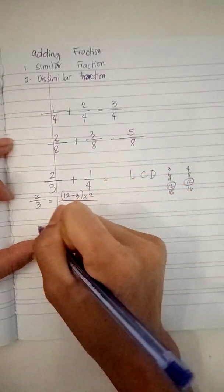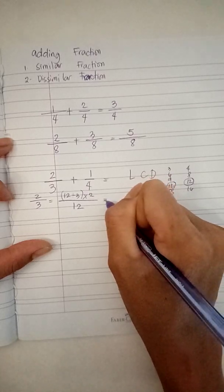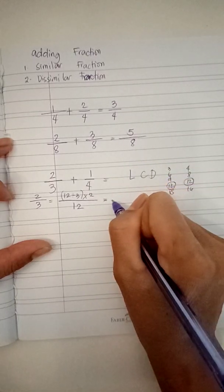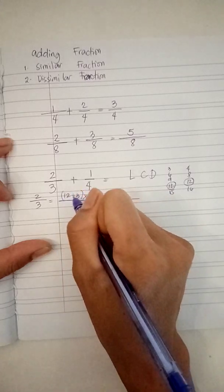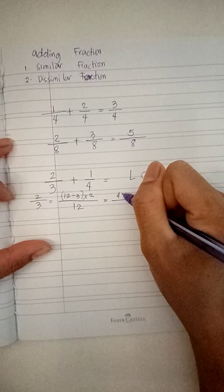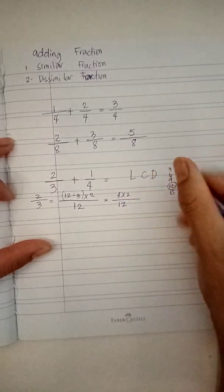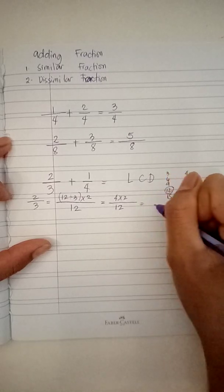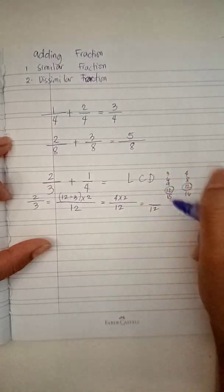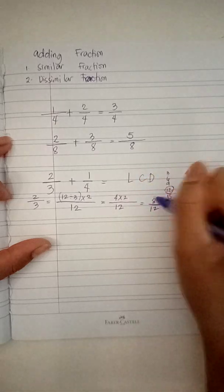Twelve divided by three equals four times two over twelve. Therefore, it will be twelve. Four times two equals eight.